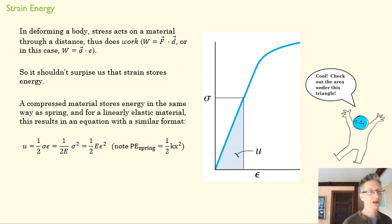Then we can start using our relationship between stress and strain, that is that sigma is equal to E times epsilon, to get some different forms of this. Energy is equal to this. And then finally, we get energy is equal to half E epsilon squared.